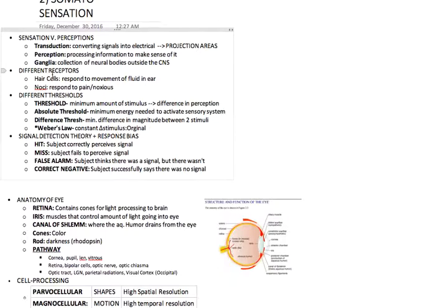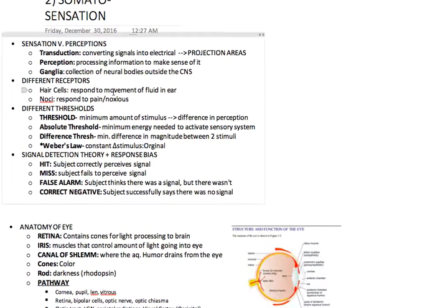There's different types of receptors. Hair cells respond to the movement of fluid in the ear, which is basically what we're going to end up seeing, how rotational and linear acceleration happen. Nociceptors respond to pain and noxious material. There's other types of receptors.